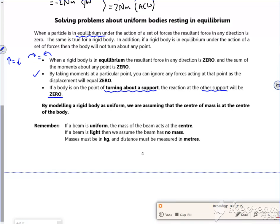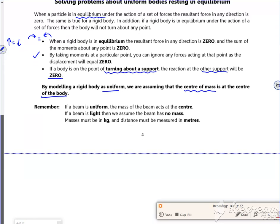So then we model it as a rigid body which is uniform, so it has the same thickness, so that means that the center of mass, all the weight from that beam acts down at the center, halfway. There.